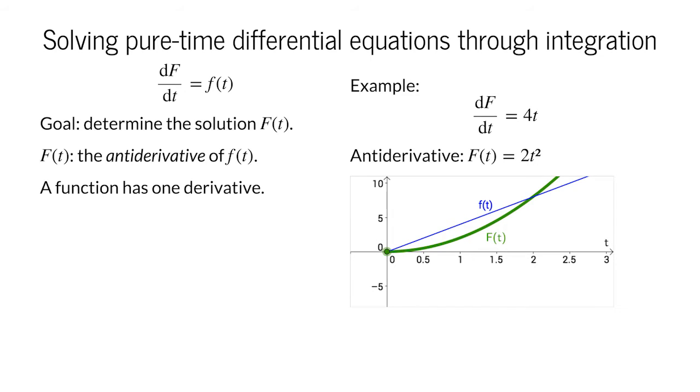Now a function has exactly one derivative. What about for the antiderivative? It turns out that a function has many antiderivatives. Since the derivative of a constant is zero, we can add any constant to the antiderivative, and its derivative will still be the function little f of t.